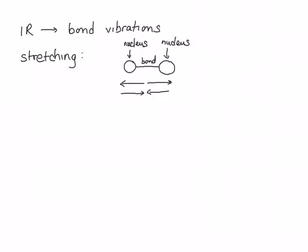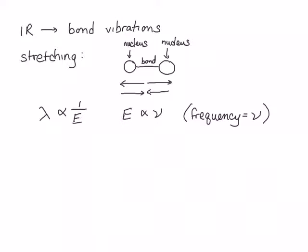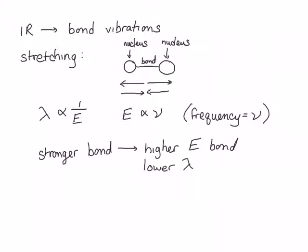The energy of the radiation that's absorbed tells us something about the energy of the bond. Remember that the wavelength of light is inversely proportional to the energy of that light, and also that the energy of the light is directly proportional to the frequency of that light. So if we have a stronger bond that's absorbing the light, that means we have a higher energy bond, which means that bond should absorb a lower wavelength of light or a higher frequency.